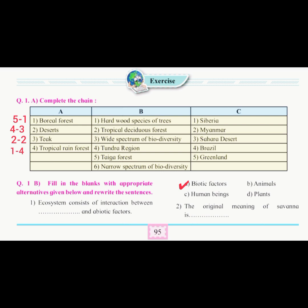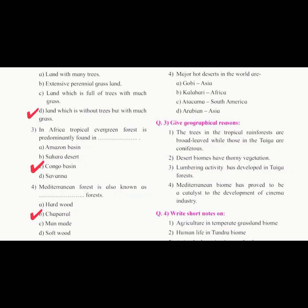Question number 1B: fill in the blanks with appropriate alternatives given below and rewrite the sentences. First: ecosystem consists of interaction between biotic and abiotic factors. Second: the original meaning of savannah is land which is without trees but with much grass. Third: in Africa, tropical evergreen forest is predominantly found in the Congo Basin. Fourth: Mediterranean forest is also known as chaparral forest.